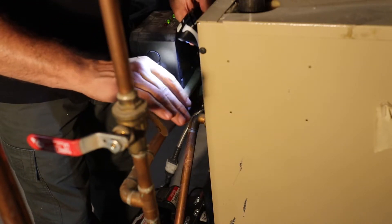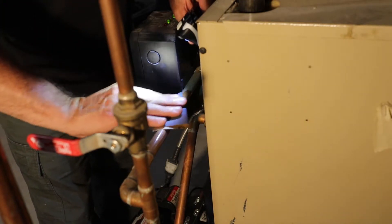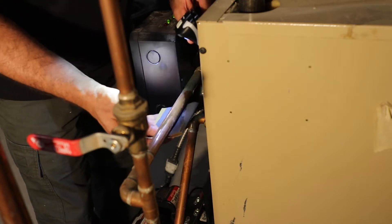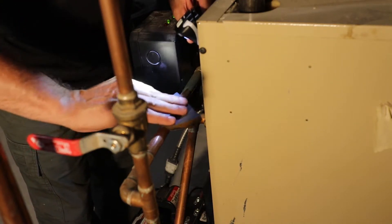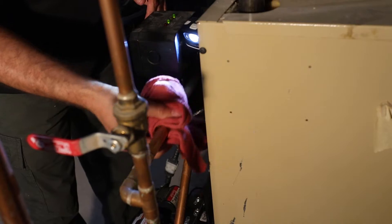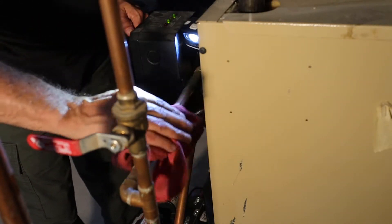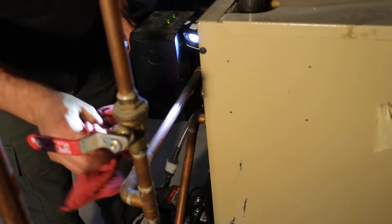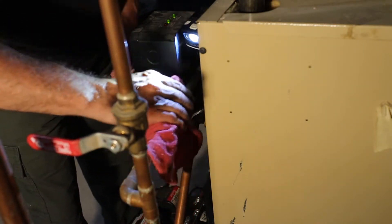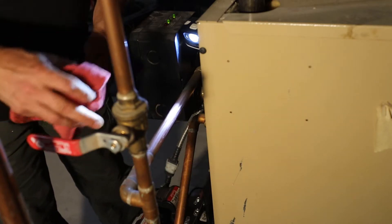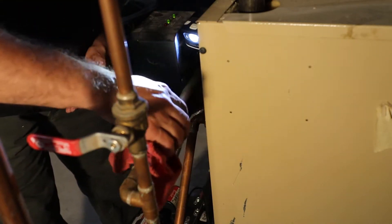Now before I put any of the tape on, I'm just going to try and clean up the area around the pipe with a little bit of fine grit sandpaper. Now this is still a little bit wet because even though the water is turned off to the furnace, there's still a little bit of pressure in there. But this package says we can apply this tape wet. So I'm going to give it a try and see if it works.